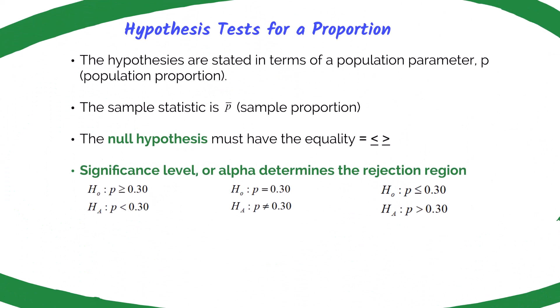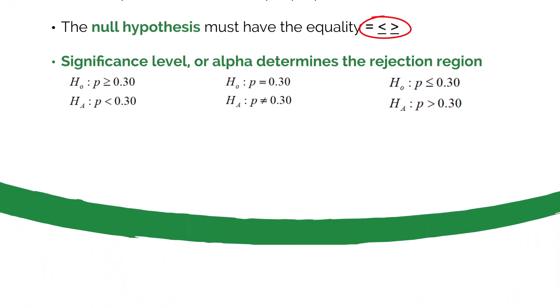For a proportion, hypotheses are stated in terms of a population parameter, or lowercase p, for the population proportion. The sample statistic we're going to use to understand the population is p-bar, or the sample proportion. The null hypothesis must have the equality symbol — equals, less than or equal to, or greater than or equal to. The significance level, or alpha, will determine the rejection region.